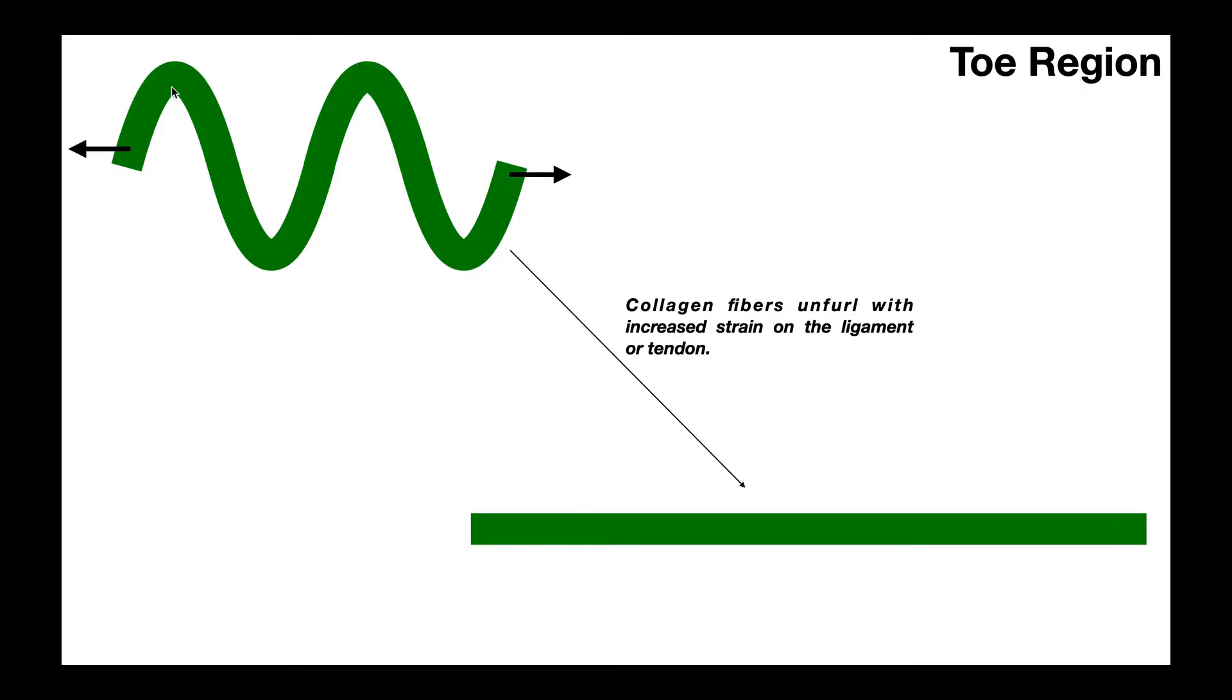And so if we think about this in terms of collagen fibers within a tendon or ligament, this curl is certainly exaggerated. But initially, when we put tension on a ligament or tendon, it's not going to lengthen at all. All that's going to happen to those collagen fibers is they're going to unfurl. And once they get into their linear forms, that's the way you could think about it, then we can start applying extensibility to them.